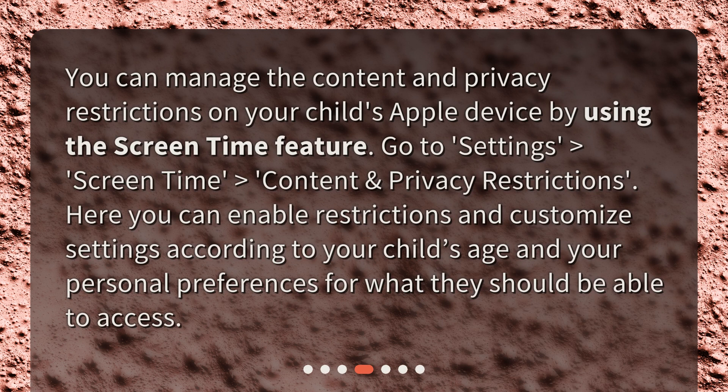You can manage the content and privacy restrictions on your child's Apple device by using the Screen Time feature. Go to Settings > Screen Time > Content and Privacy Restrictions. Here, you can enable restrictions and customize settings according to your child's age and your personal preferences for what they should be able to access.